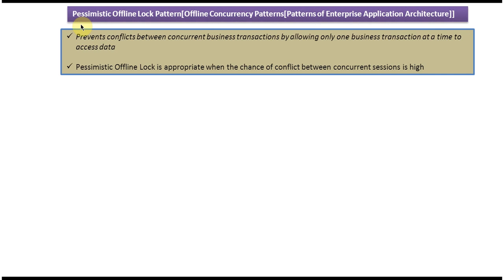Today I will cover the pessimistic offline lock pattern. This pattern belongs to the offline concurrency patterns, which in turn belongs to patterns of enterprise application architecture. The pessimistic offline lock pattern prevents conflicts between concurrent business transactions by allowing only one business transaction at a time to access the data.